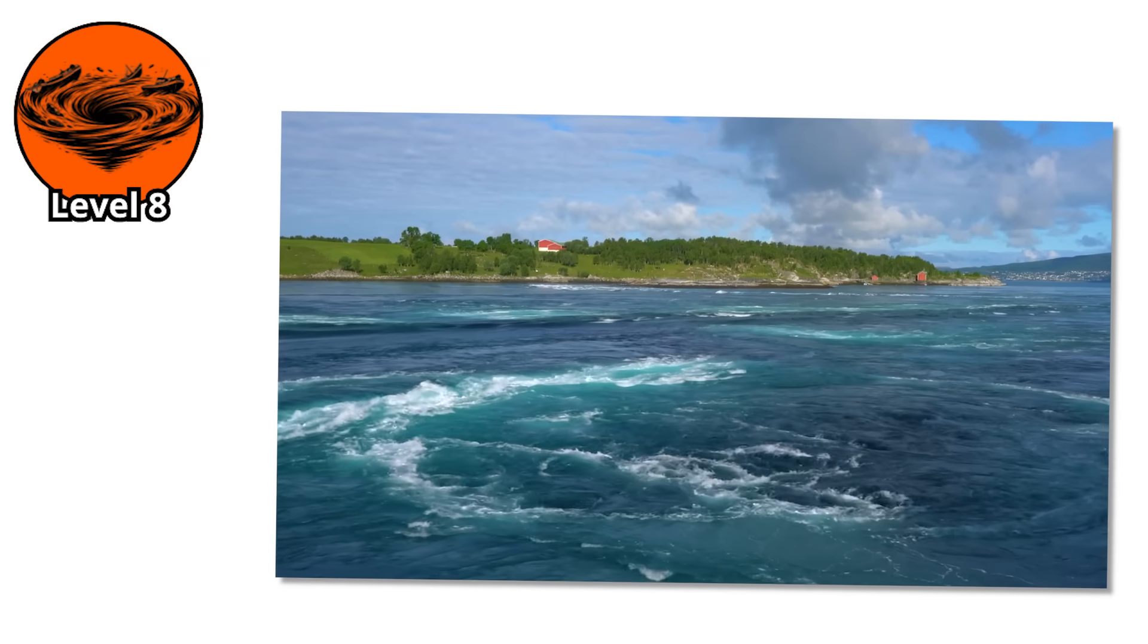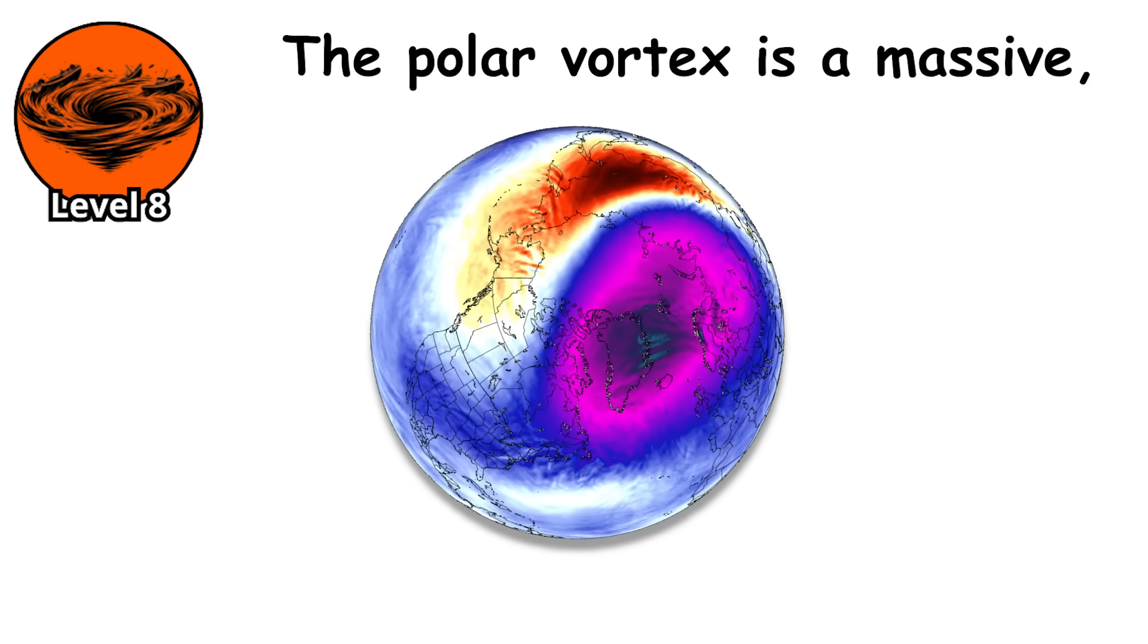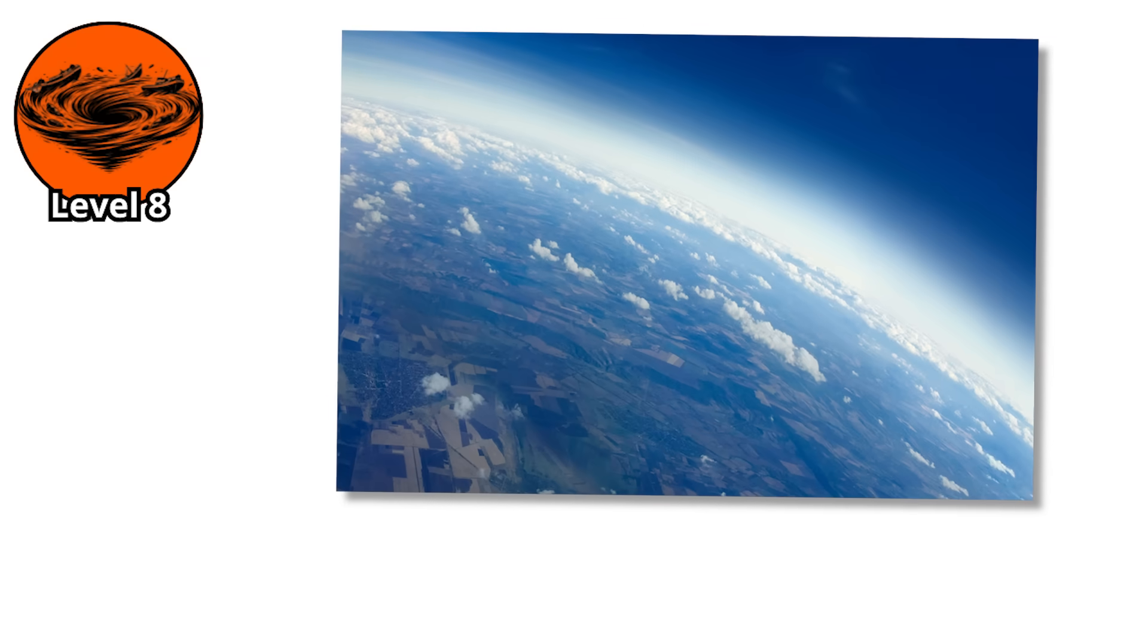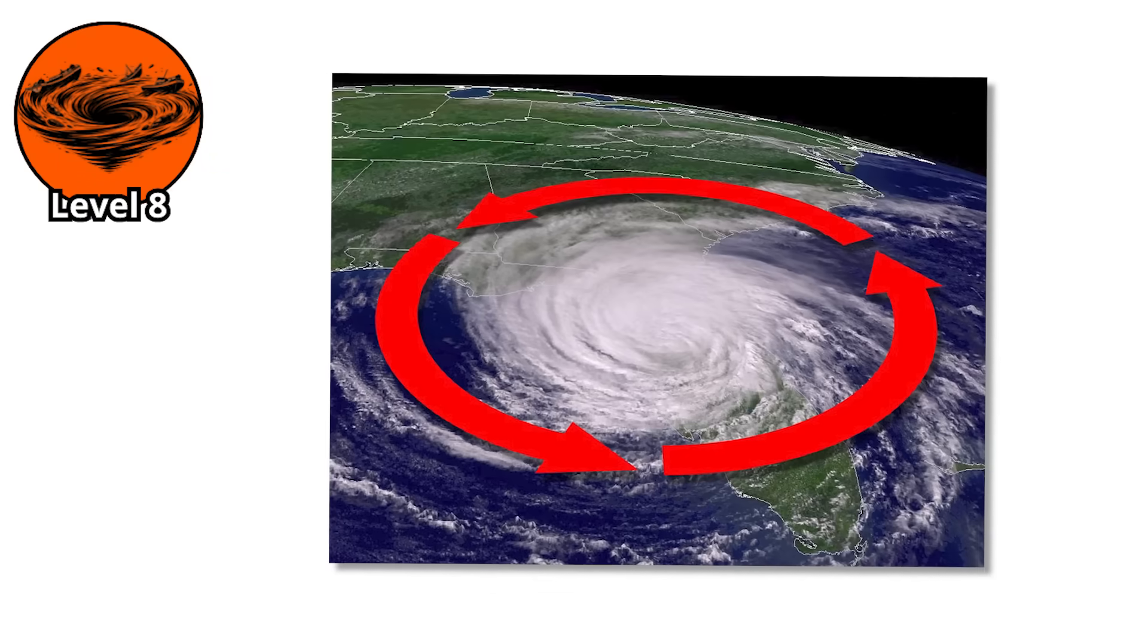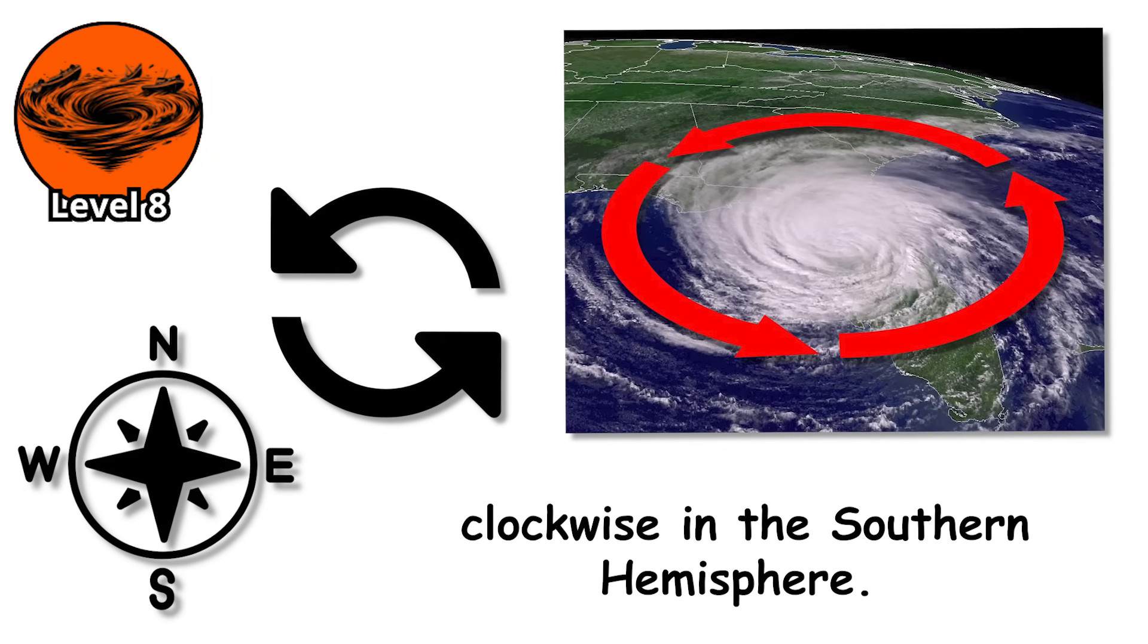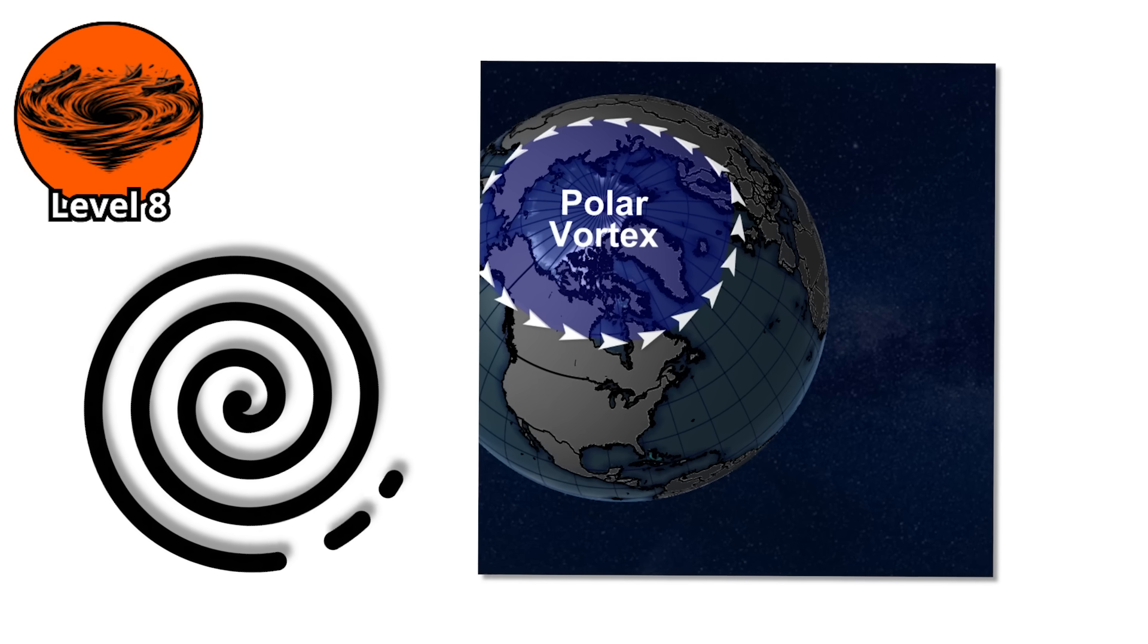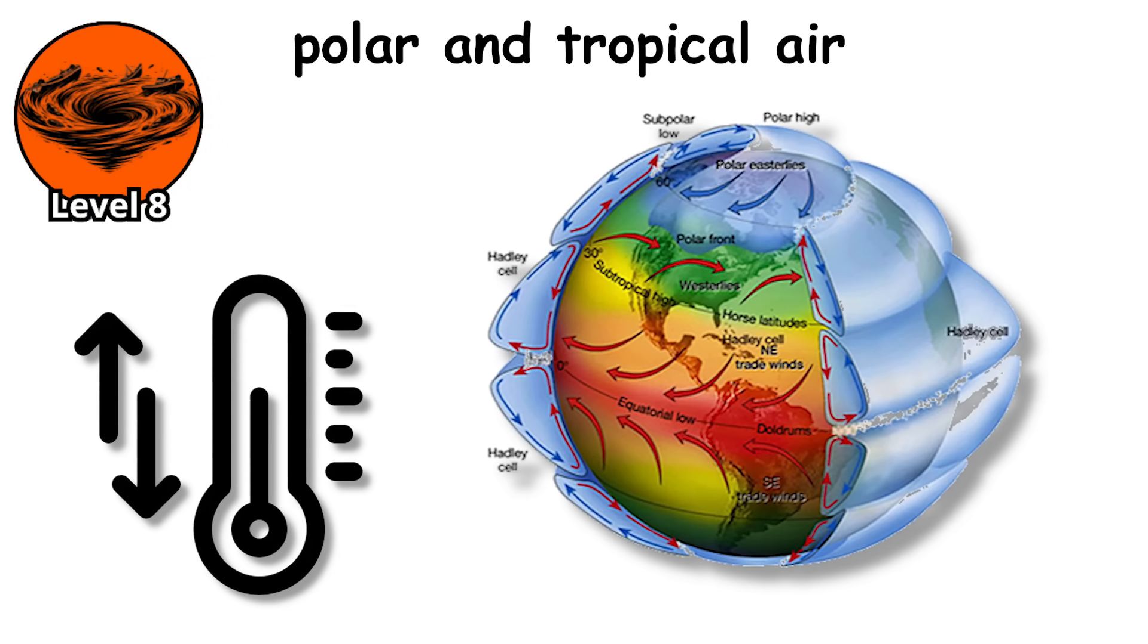This is where whirlpools stop being about water and start being about survival. The polar vortex is a massive permanent whirlpool of air that circles the north and south poles. It exists in the stratosphere, about 6 to 30 miles above Earth's surface, and it's always there spinning counterclockwise in the northern hemisphere, clockwise in the southern hemisphere. Under normal conditions, the polar vortex stays tightly wound around the poles, kept in place by the temperature difference between polar and tropical air.